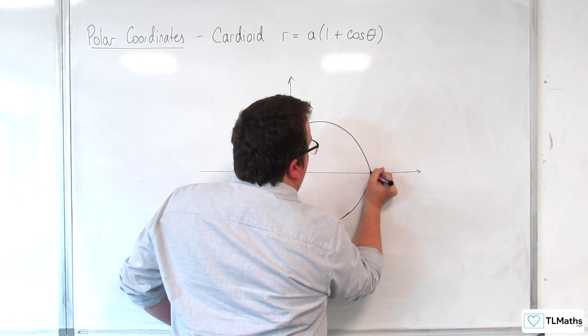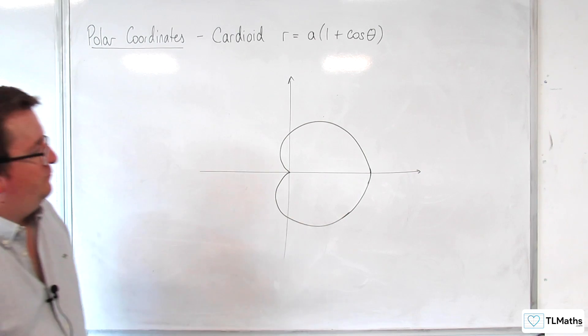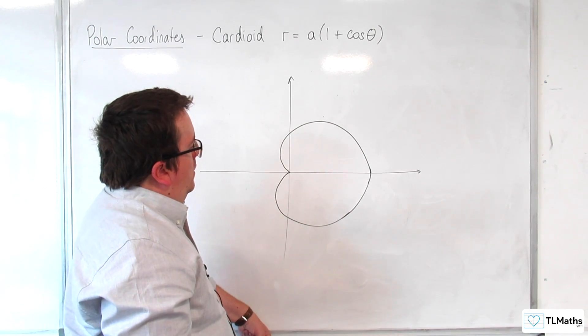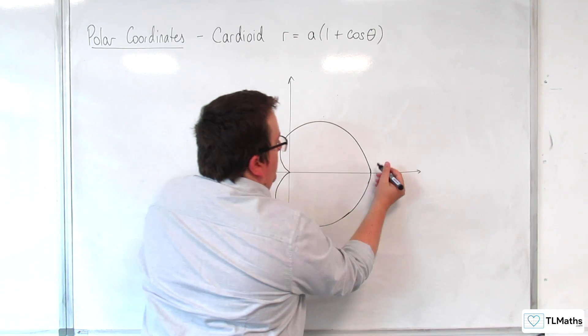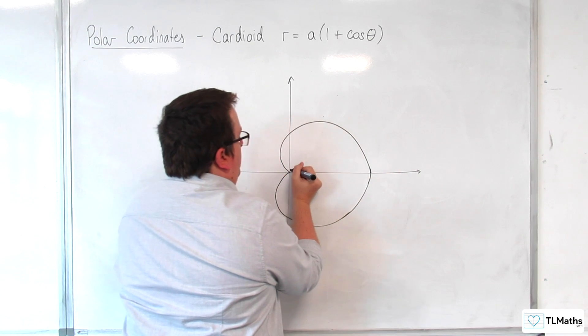It is kind of more curved there, it's not really pointed. Now, this is obviously when theta is 0, and this is when theta is pi.